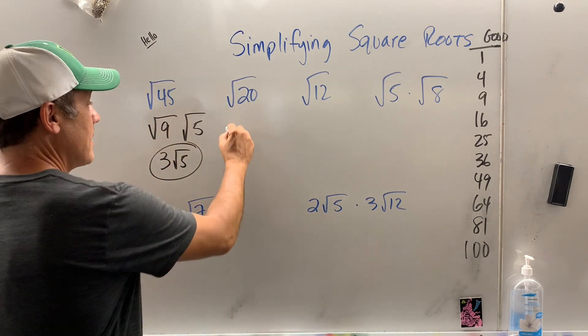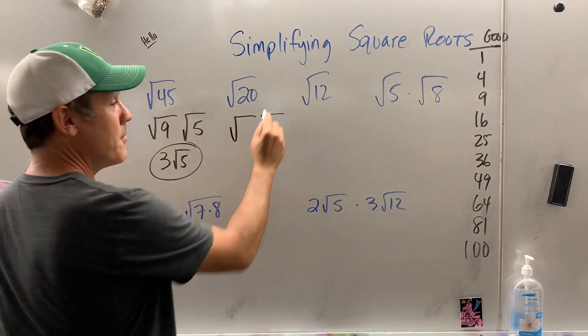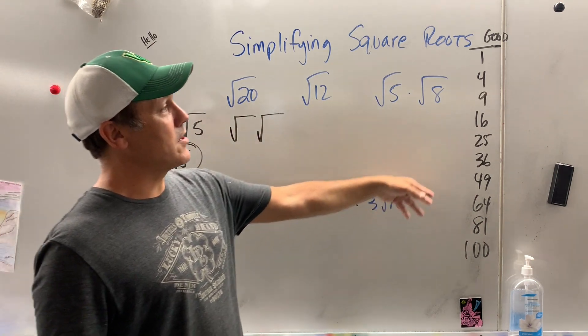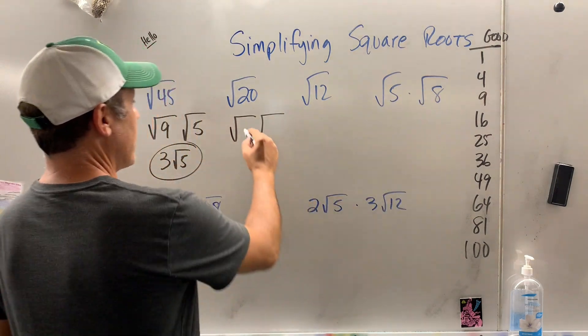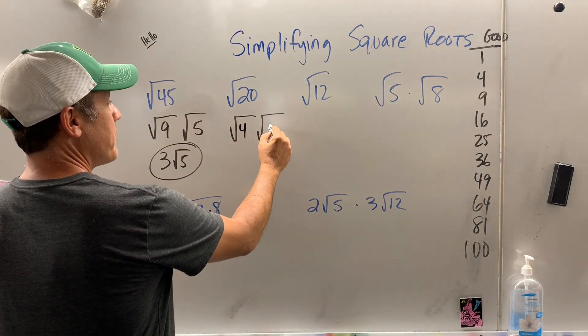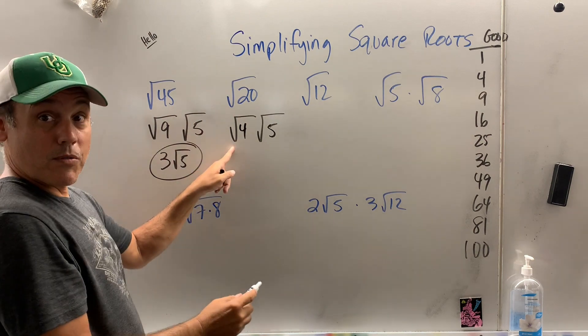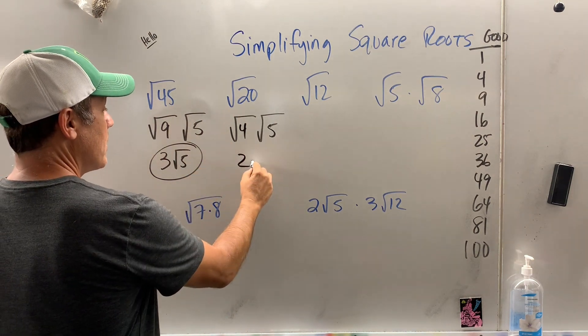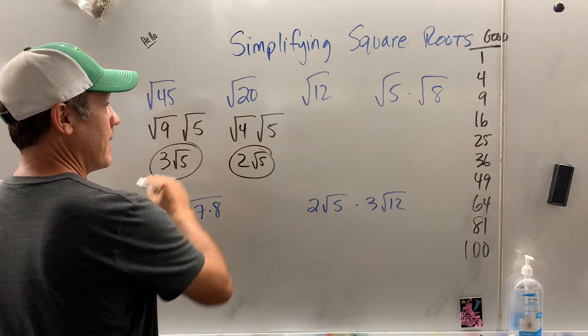How about here? The good, the bad. What number on my list goes into 20? I can see it. It's 4. That goes in 4 times what? 5. What's the square root of 4? 2 radical 5.